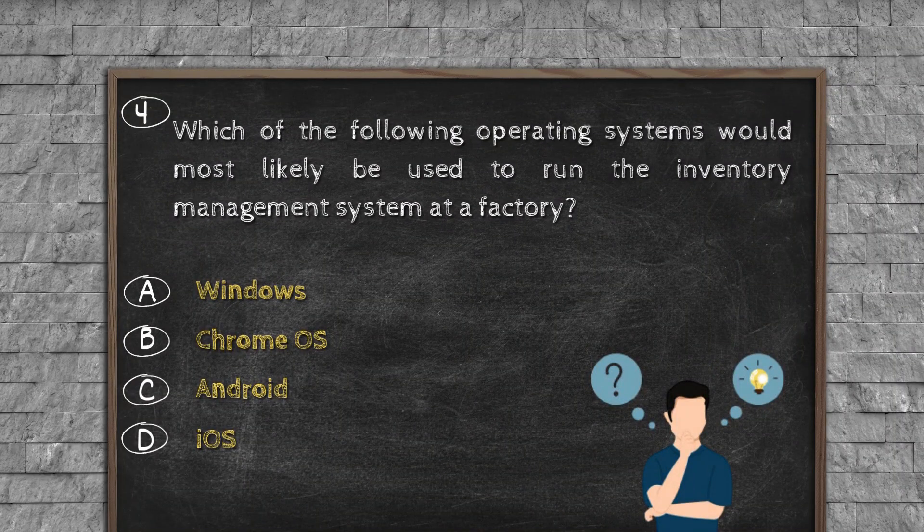Question number four. Which of the following operating systems would most likely be used to run the inventory management system at a factory? Option A, Windows. Option B, Chrome OS. Option C, Android. Option D, iOS.